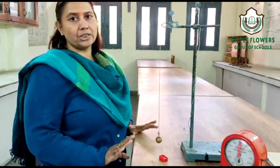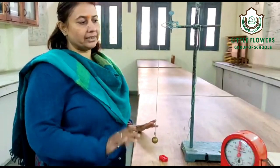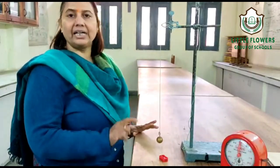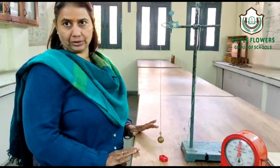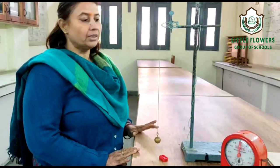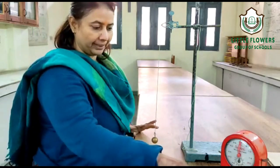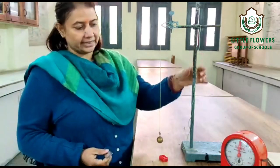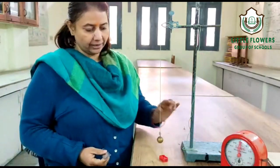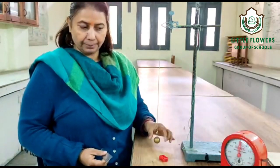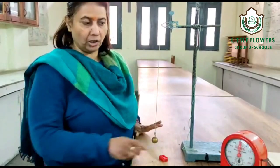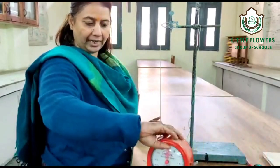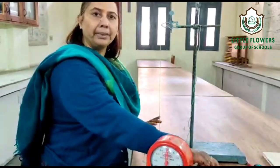Secondly, we need to draw the graph between L and T-squared. The apparatus required includes a clamp stand, any type of mechanical ball, a stopwatch, as well as a meter scale.